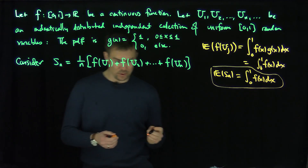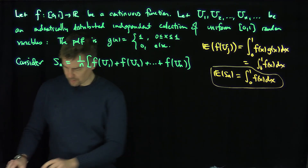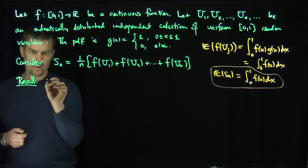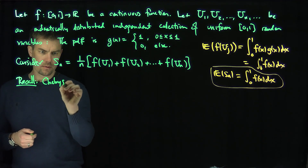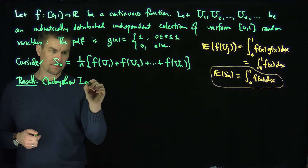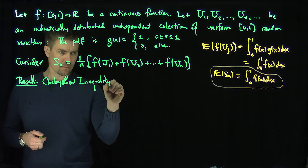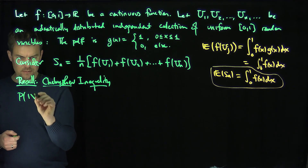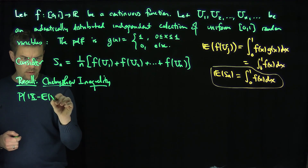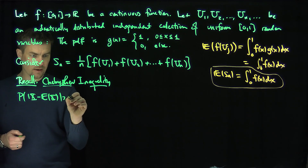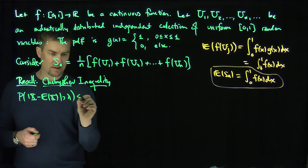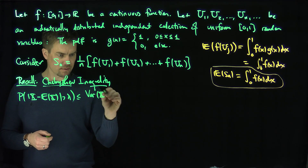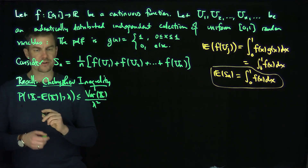So I'd like to know what's the convergence of Sn as n gets very large to this integral. Let's use the Chebyshev inequality. Recall: the probability that a random variable X deviates from its expected value by more than a parameter lambda is less than or equal to the variance of X over lambda squared.